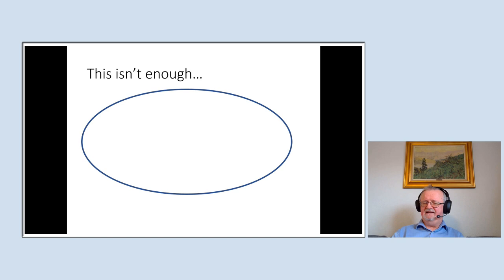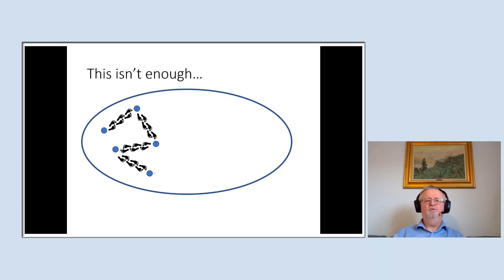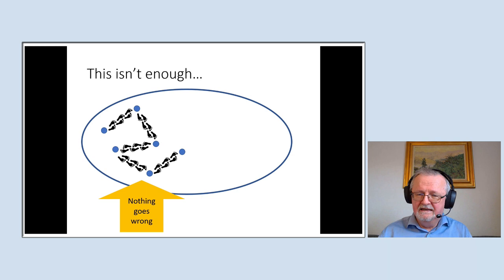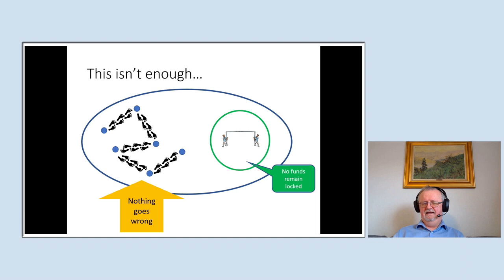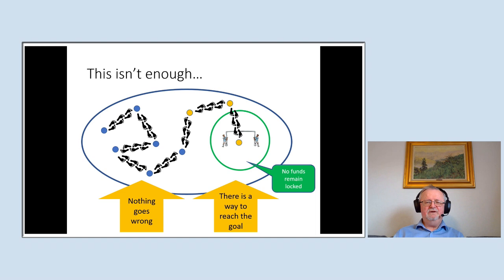But we realized that for smart contracts, this isn't enough. What we're testing is that if you make a random walk in the state space, nothing bad ever happens — nobody steals your money. That's important, but it's not the only thing you care about. For smart contracts, you usually have some kind of goal state in mind — for example, a state in which no money remains locked in the contract. You want to know not only that nothing goes wrong, but that it's always possible to reach that goal state. You want to know it's always possible to get the money out of the contract again.